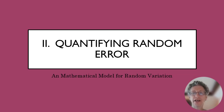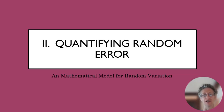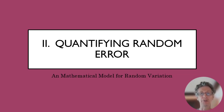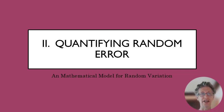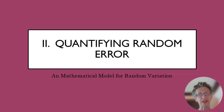Last time we introduced the idea of uncertainty and error in experimentation, and we're going to start on a journey of trying to figure out how to quantify that with this lecture today. The aim today is just to figure out a way to describe random variation.